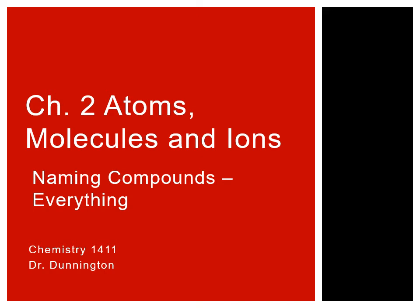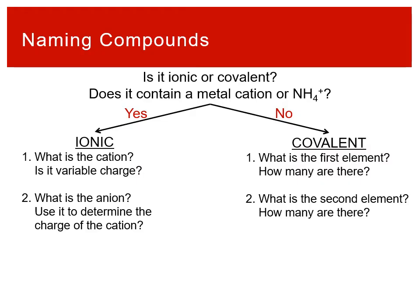Now that we've talked about all the different rules for naming and all the different steps in the process, we want to put it all together and look at naming as a whole and dealing with describing different compounds. We have this overall system for naming things where we can start with: is it ionic or covalent? We have our rules for ionic, and then we have our rules for covalent compounds, and we can overall follow those.